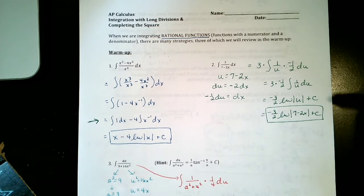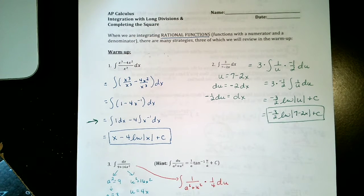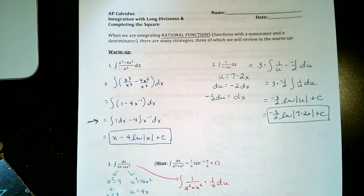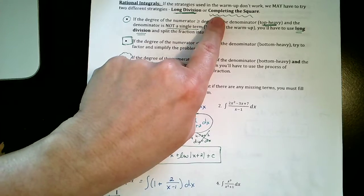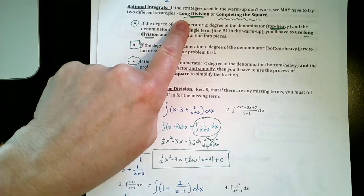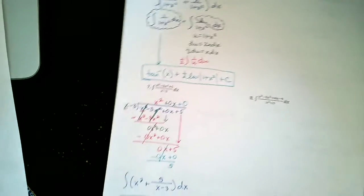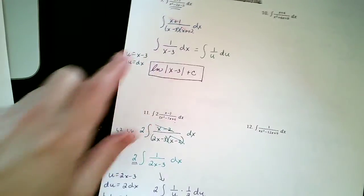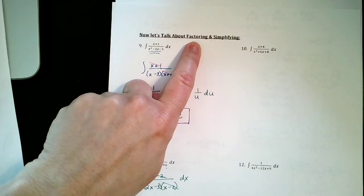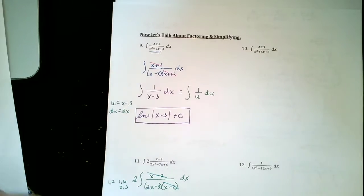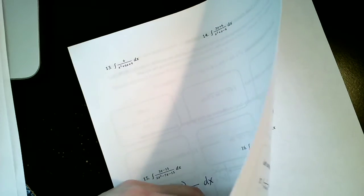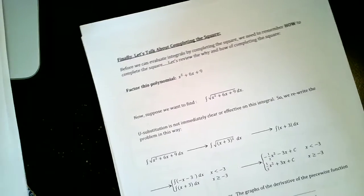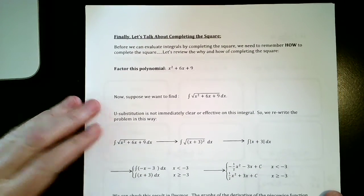For the third part of the three-part series on integration of rational functions, just as a review, remember we learned how to integrate using long division, then we jumped over to how to integrate rational functions with factoring and simplifying. Today we are going to get to the last one which is factoring with completing the square.